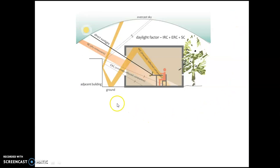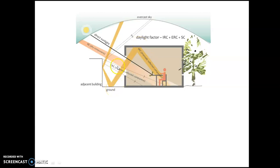Your daylight factor depends upon the internal reflectance component, external reflectance component, and the sky component. The sky component is what you get directly from the skylight. The external reflectance component is the light which hits on the adjacent building or ground and is then reflected inside. Together with the internal reflectance component, all these components help in giving the daylight factor.